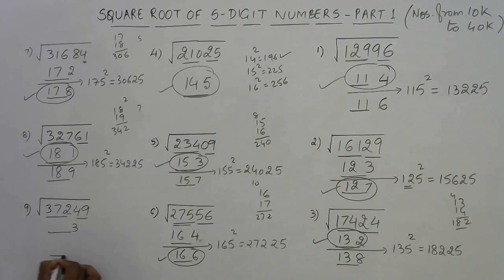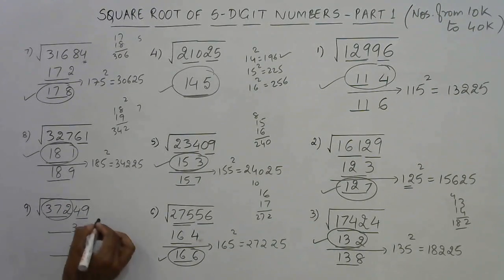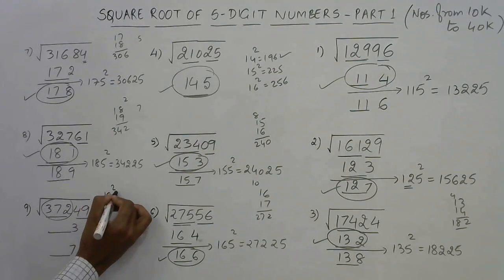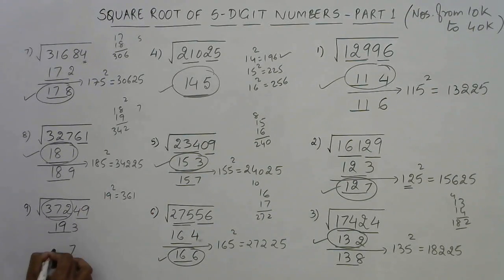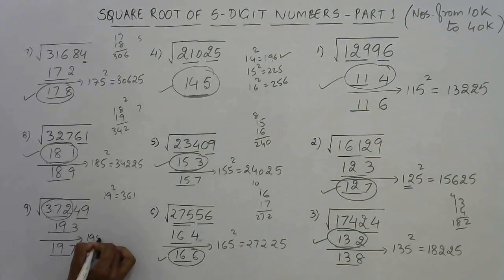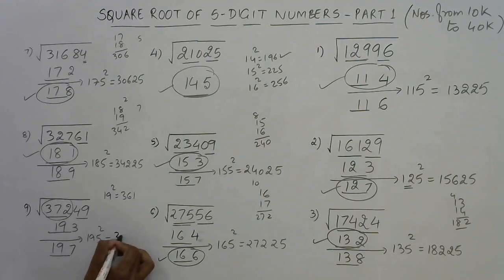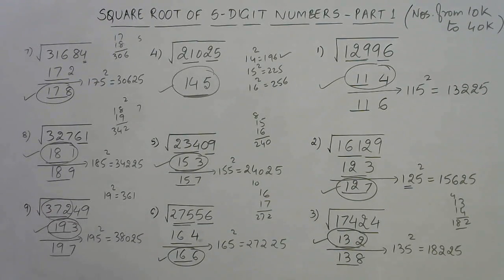Last example ends with 9: the answer ends with 3 or 7. The triplet is 372: 19² = 361 is just below 372, so 19 is the remaining part. Options: 193 or 197. Intermediate: 195². Find 19 × 20 = 380, append 25 → 38025. The original number is smaller than 38025, so the answer is 193.